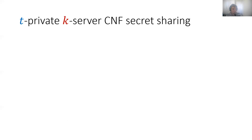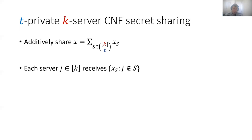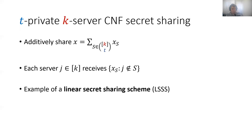One central tool for this construction is the so-called T-private K-server CNF secret sharing. This secret sharing is done as follows: we additively share some secret and the number of additive shares corresponds to the number of T-sized subsets of the indices one to K, where K is the number of servers. Then each server J receives all the shares associated with sets which don't contain its index J. This is an example of a linear secret sharing scheme. Of course this has bad information rate — to share one secret, each server needs to receive roughly K-choose-2T field elements.